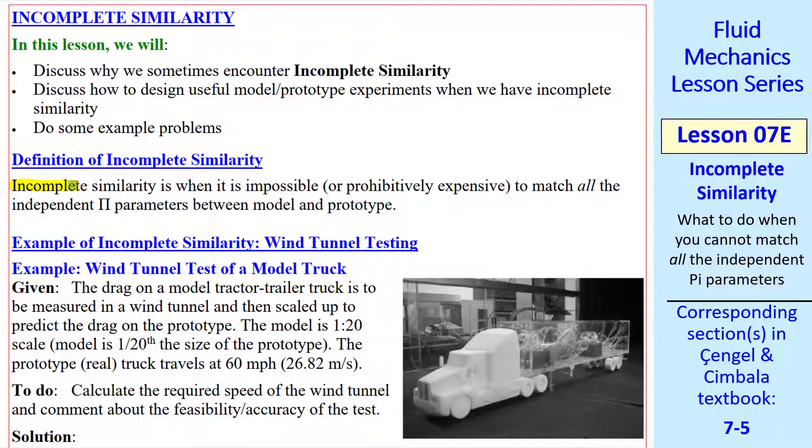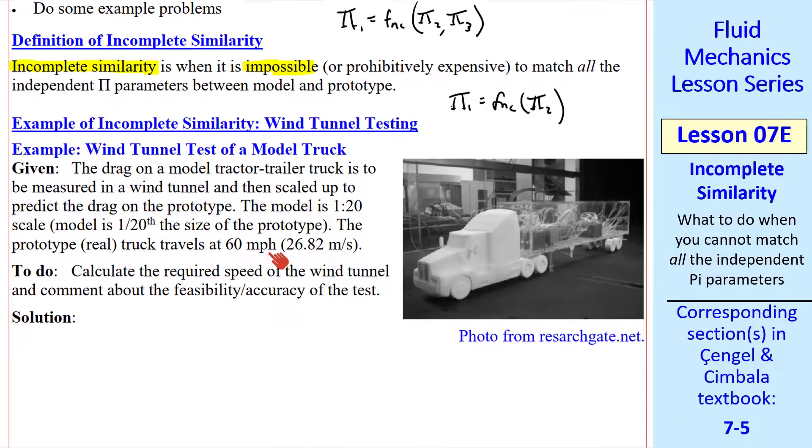First, a definition of incomplete similarity. It's when it's impossible or prohibitively expensive to match all the independent pi parameters between model and prototype. For example, you may have pi1 as a function of two other pis. You might be able to match one of them but not the other. So you cannot achieve complete similarity. Sometimes we can't even achieve complete similarity with pi1 as a function of only one other pi.